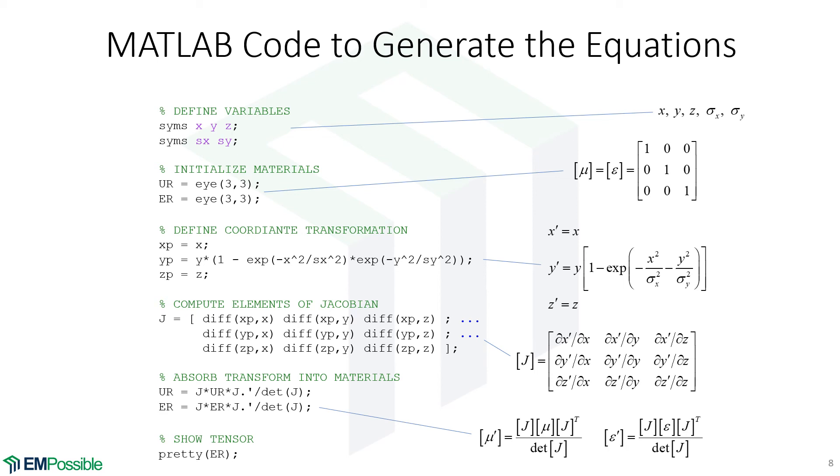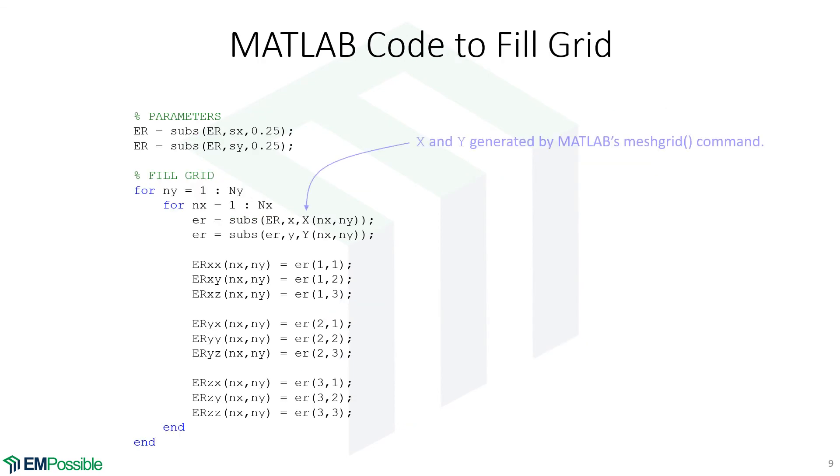What if we want to build this device onto a grid so that we could think about simulating it? Well, that's what this step does. And so the very first step here, we're taking our symbolic ER and everywhere there's a sigma X, we're putting 0.25 in there. So that's the value we're using for sigma X. Everywhere there's a sigma Y, we're also putting in a value of 0.25. So we're just replacing these symbolic variables now with 0.25. So the only symbolic variables left are X, Y, and Z.